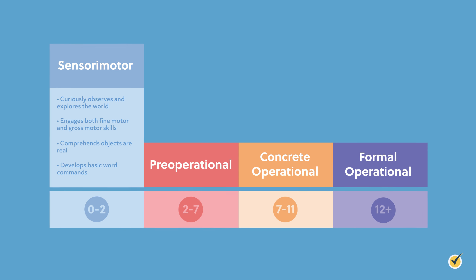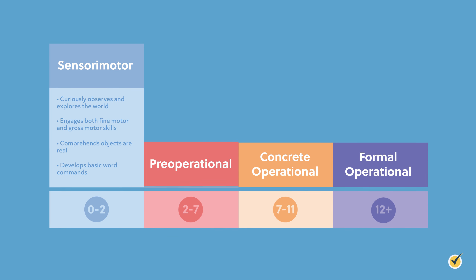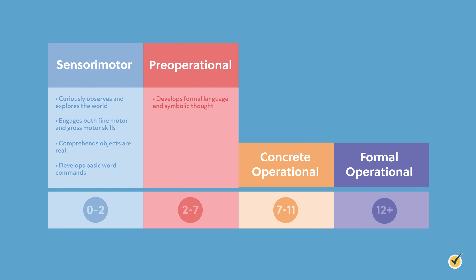Once the child has taken the first step of the sensorimotor stage, they'll then move up the staircase to the second stage called pre-operational. Between the ages of two and seven, Piaget theorized that a child develops formal language and symbolic thought. Examples include role-playing and imagination during play, along with formal sentences which may include vocalizing likes, needs, and questions.